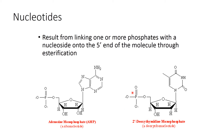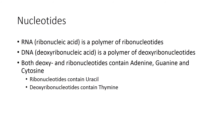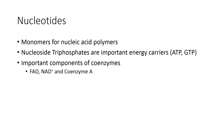RNA, that is ribonucleic acid, is a polymer of ribonucleotides, and DNA is a polymer of deoxyribonucleotides. Both deoxy and ribonucleotides contain adenine, guanine, and cytosine. Ribonucleotides contain uracil, and deoxyribonucleotides contain thymine — this is the basic difference between the two. Nucleotides are the monomers for nucleic acid polymers.